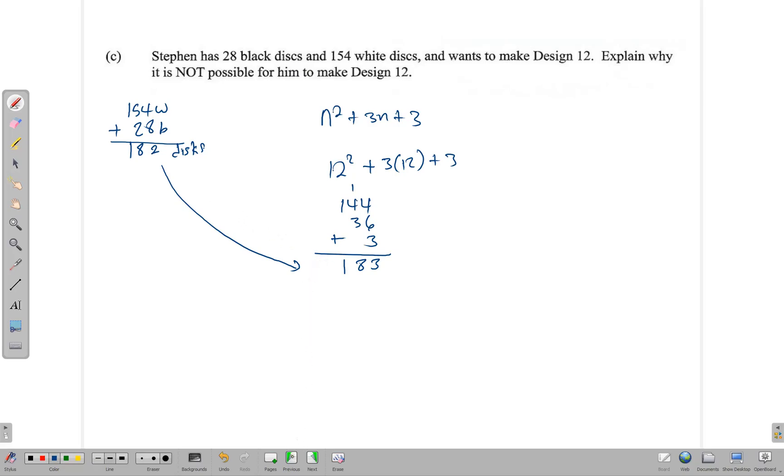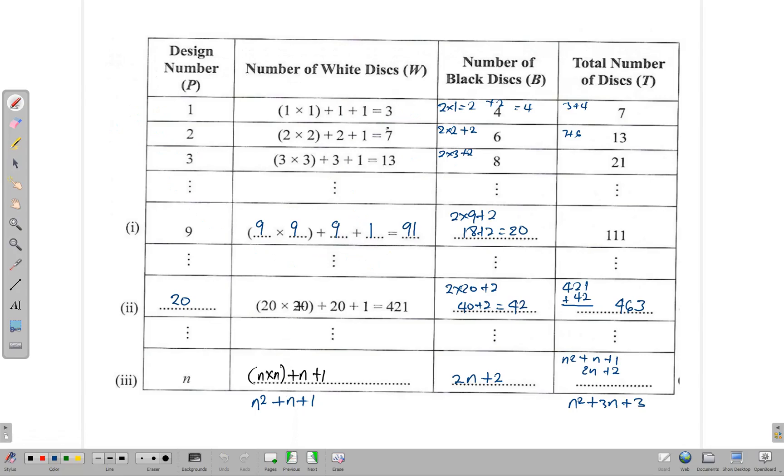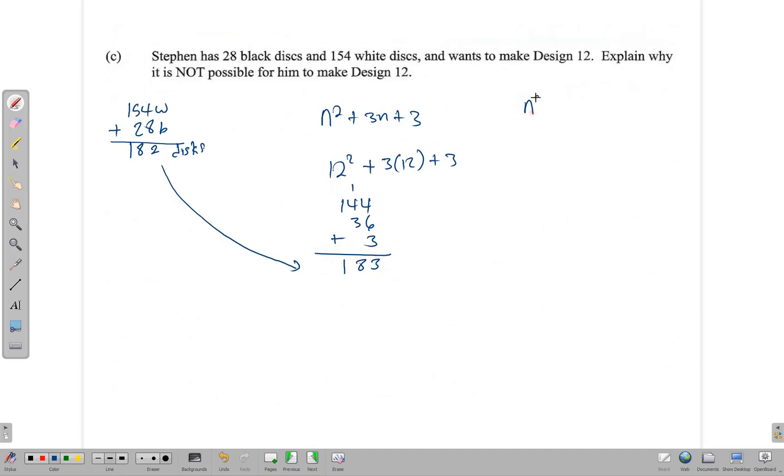So he cannot make pattern 12 because he doesn't have enough discs. There is another way to look at this as well. If you look at the generalization for the number of white discs it is n square plus n plus 1. So we write that down n square plus n plus 1 for white. So using the 12, it's going to be 12 square plus 12 plus 1 which is 144 plus 12 plus 1. That gives us 7, 5 and 1. So it needs 157 white discs. And at present he only has 154 so he is short there.